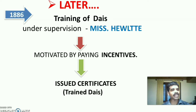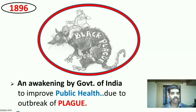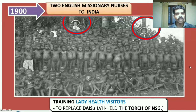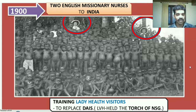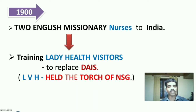During 1886, training for dais was given by Ms. Evelt under her supervision. She motivated the untrained dais by paying incentives and, at the end of training, issued certificates and renamed them as trained dais. During 1896, the outbreak of plague awakened the Government of India to improve public health. During 1900, two English missionary nurses came to India and gave training to lady health visitors to replace the dais. Lady health visitors were considered as holding the torch of nursing during that period.